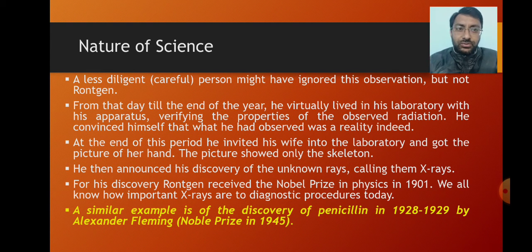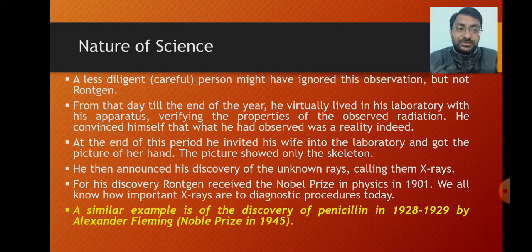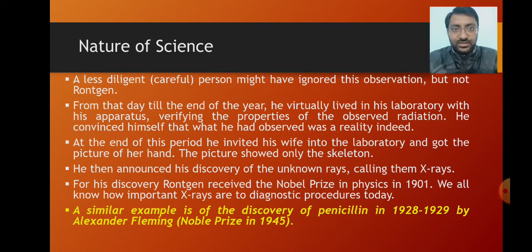At the end of this period, he invited his wife into the laboratory and got the picture of her hand using those rays. The picture showed only the skeleton — jab rays usne apni wife ke haath se guzaari, to sirf haddiyon ka dhaacha — the skeleton inside the hand — nazar aaya. Tab usne discovery ki un unknown rays ki. Kyunki wo unknown thi, usne unko 'X' se kodify kiya, aur tab se unko X-rays kaha gaya. For his discovery, Röntgen received the Nobel Prize in Physics in 1901. And we all know how important X-rays are to diagnostic procedures today.